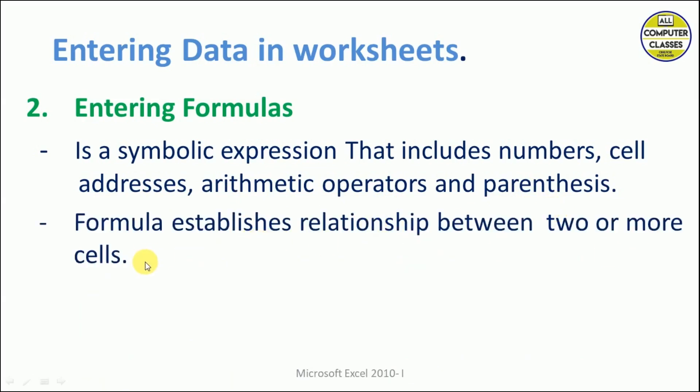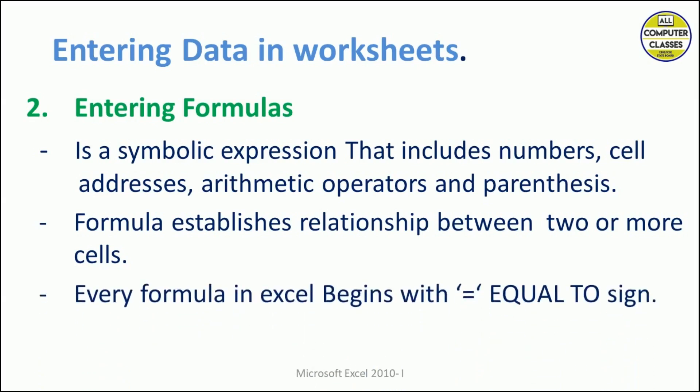A formula establishes a relationship between two or more cells — the formula will contain the names of those cells. For example, if we want to add the content of cell A1 and B1, we write =A1+B1, so it is establishing a relationship between A1 and B1. Every formula in Excel begins with an equal-to sign — keep this in mind, as it may be asked in MCQs.